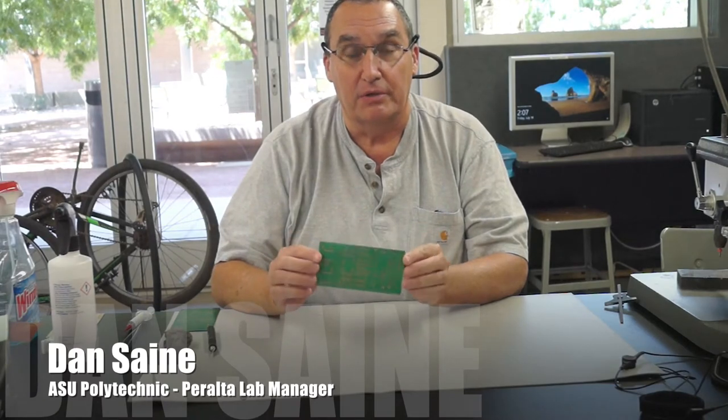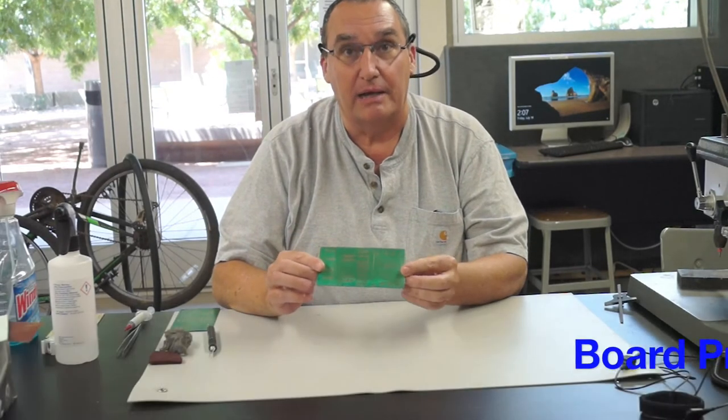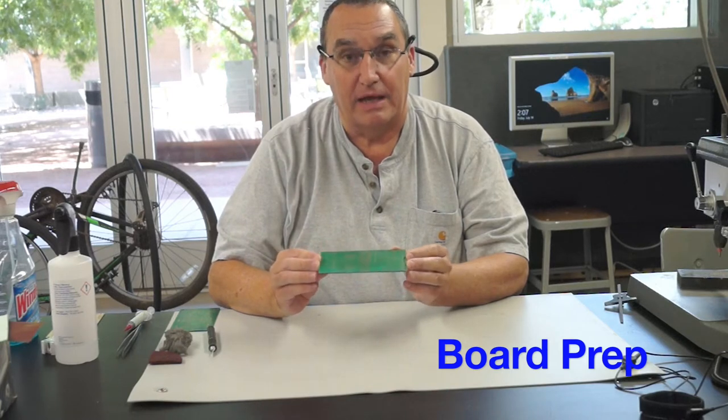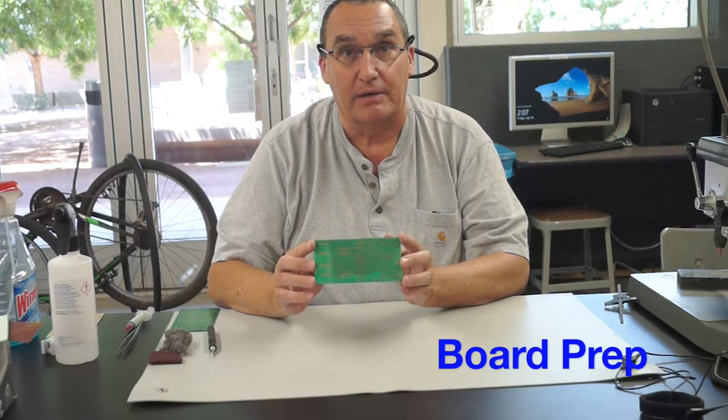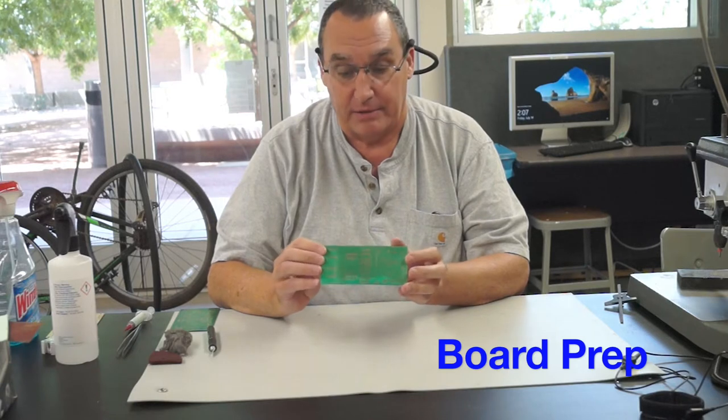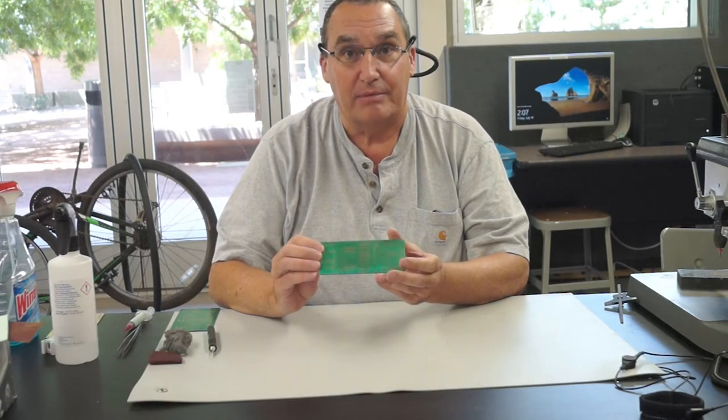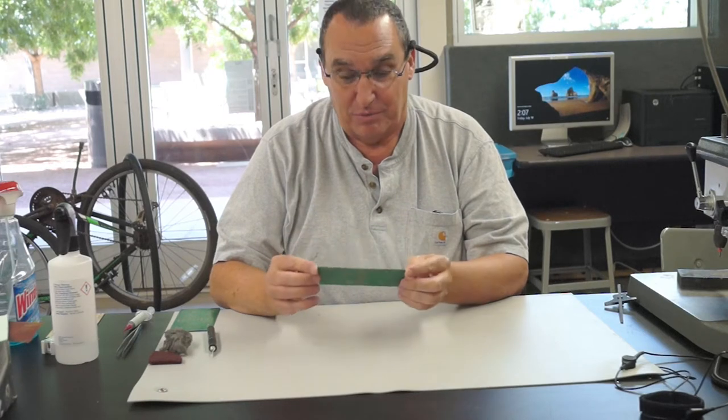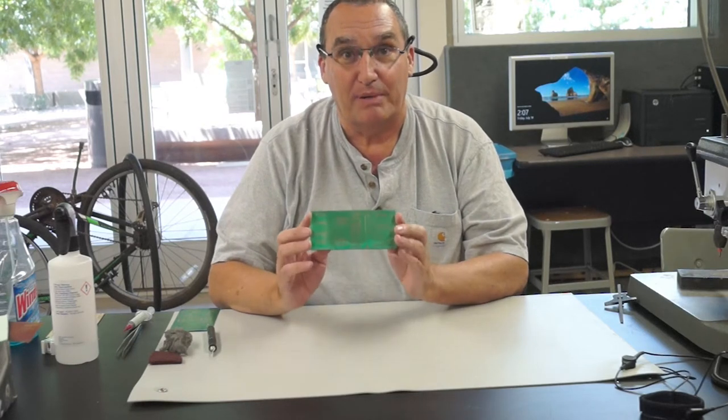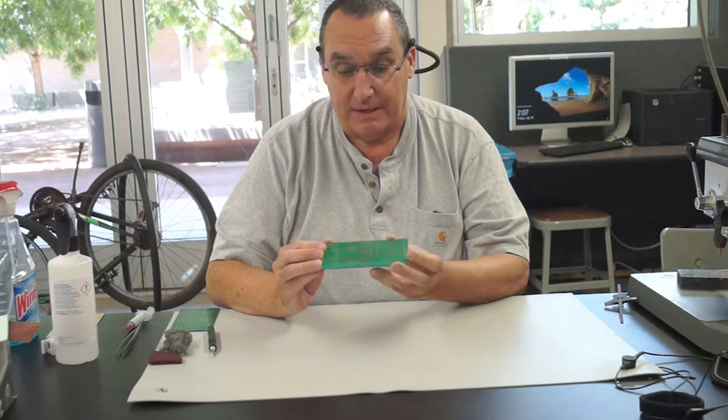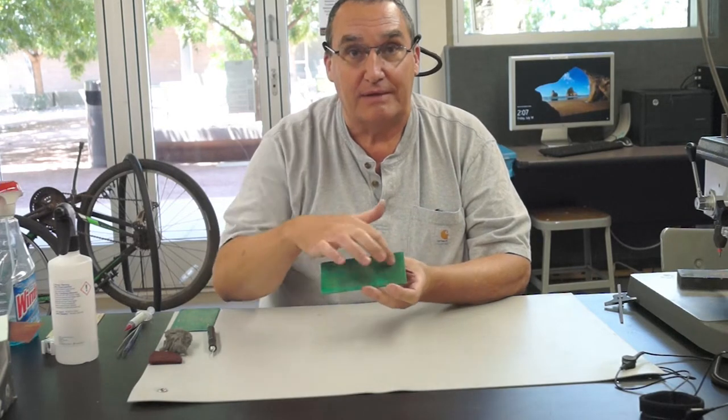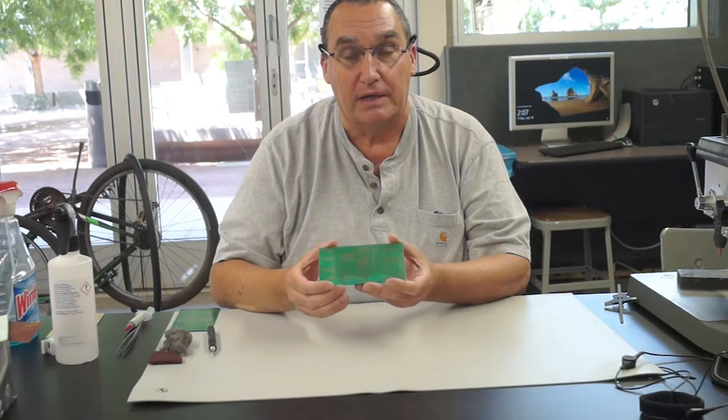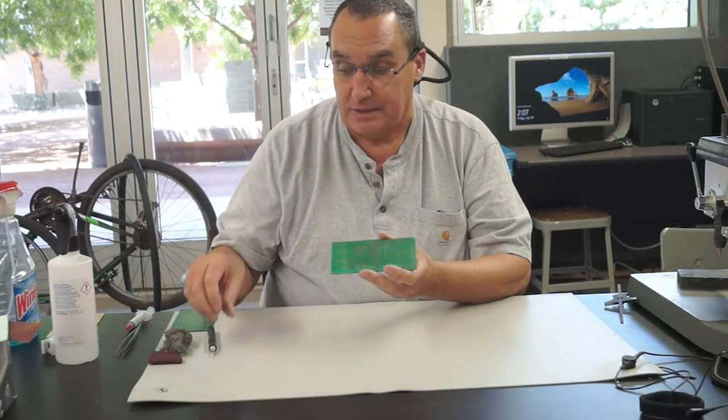Now that your board has been milled and the solder mask has been applied, we want to prepare the board for soldering. The first bit of soldering we're going to talk about is surface mount soldering. In any soldering process, it's very important that the copper be cleaned. Sometimes after the solder mask process, there's a residue that's left on the copper and we want to make sure that's cleaned off.